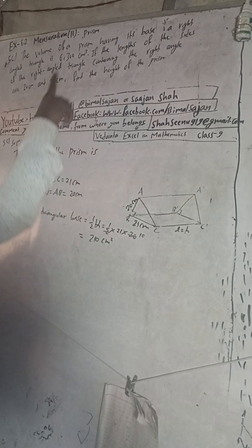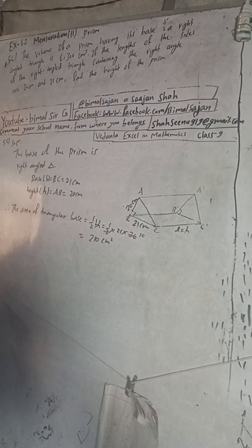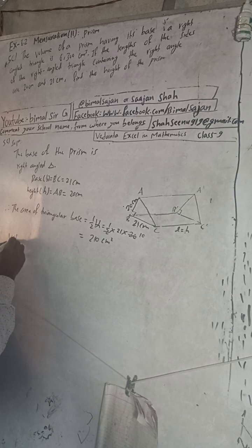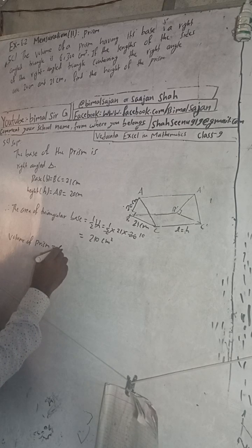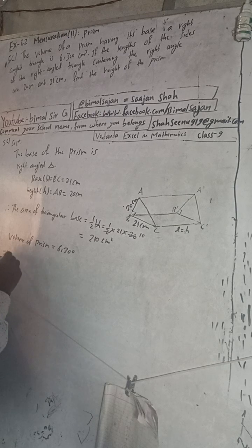Now also given there, the volume of the prism. So volume of prism is given here - volume of prism is going to how much? 6,300.